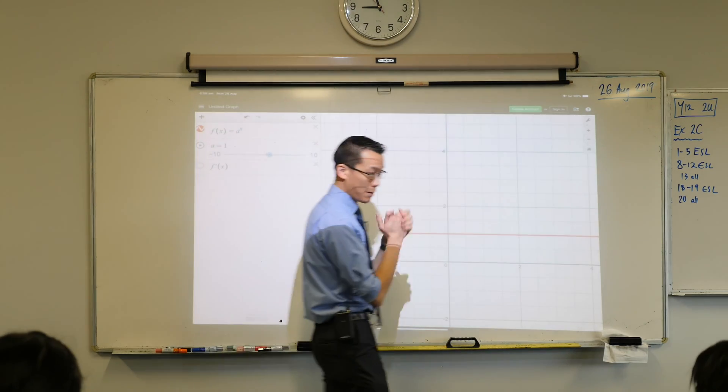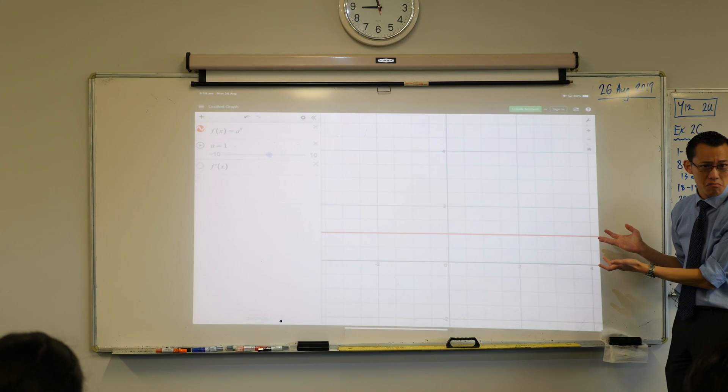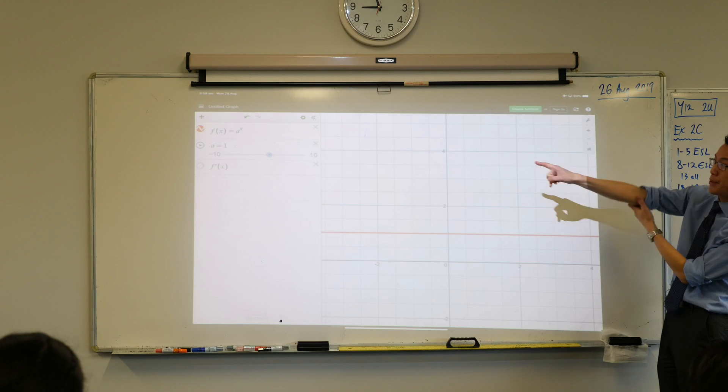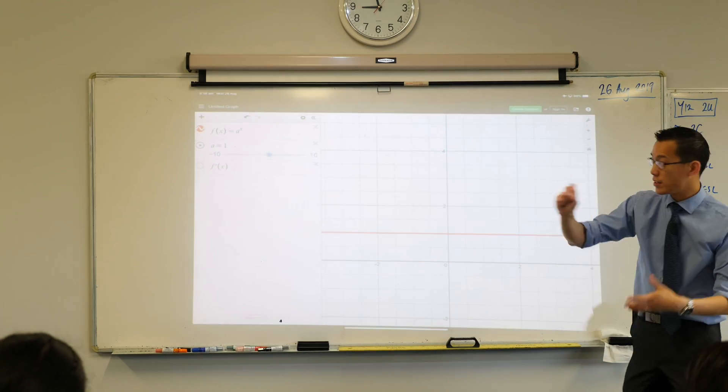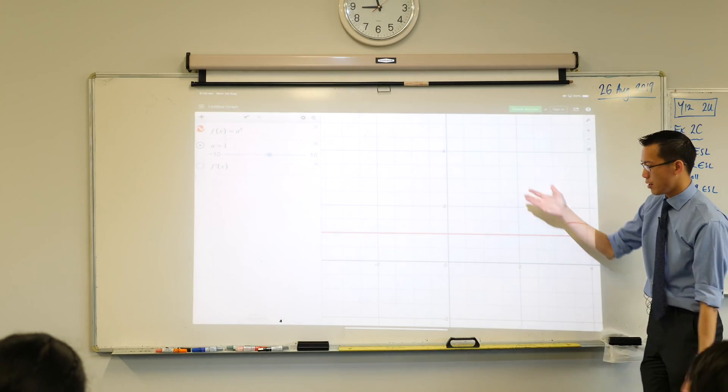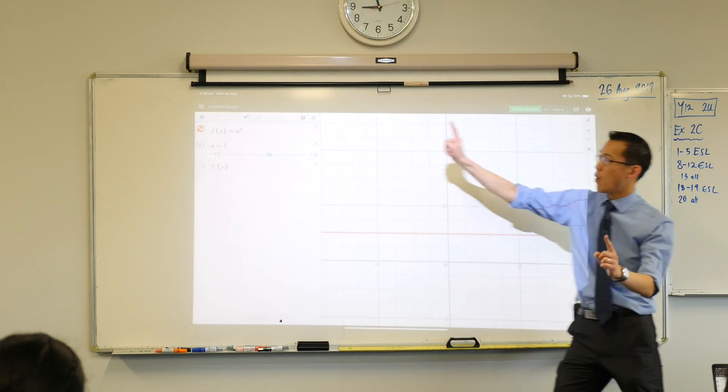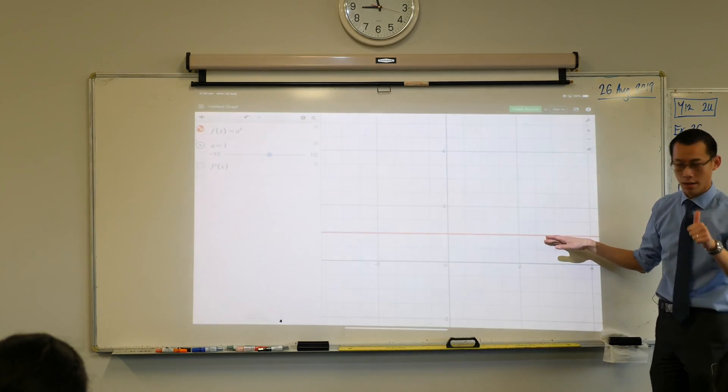Now, before we muck about and slide this thing around, what is this graph right now? What graph is this? Have a look at a particular value of a. Desmos when you ask for a slider, Desmos always defaults to this value. So a at the moment is a equals 1. So this is 1 to the power of x. So it's just 1 all the way. That's why it's a horizontal line. Make sense?